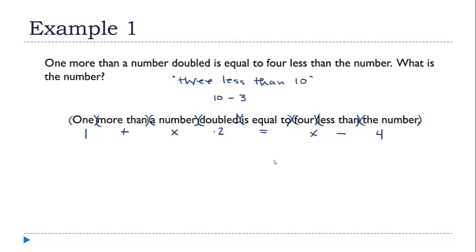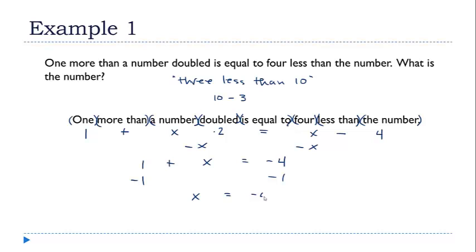Now that we've translated the entire English statement into math symbols, this leaves us with an equation we can solve. I'll start by subtracting x from both sides, which gives me 1 plus x equals minus 4. Then I'll subtract 1 from both sides, which leaves me with x equals minus 5. So the number with the property described in the original statement is negative 5.